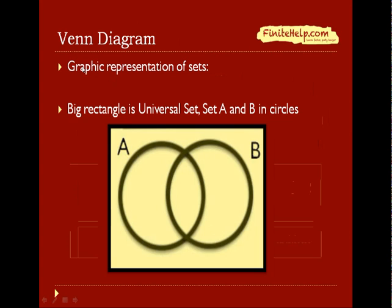A Venn Diagram is the graphic representation of sets. Here we can have an example of a Venn Diagram. The big rectangle represents the universal set, and here's set A and set B represented by circles.